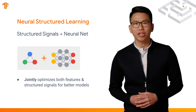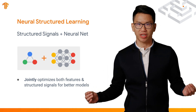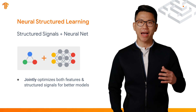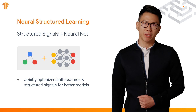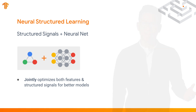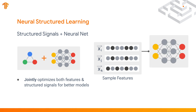Neural Structure Learning jointly optimizes sample features and the structure signals that exist among samples in order to learn a better neural net. Specifically, we now have two types of input for a neural net. The first input is the features of a training sample — for example, the pixels of an image. And the second input is the structure — for example, the graph representing the similarity among samples.